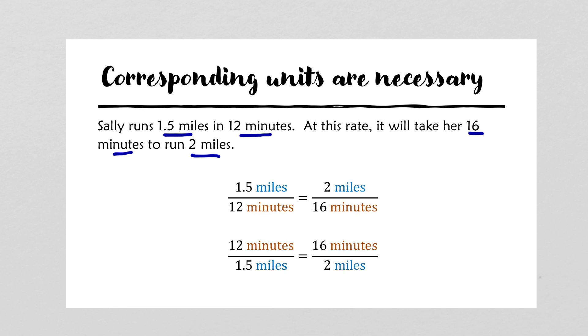What's important to note is when you set up a proportion, the units have to be corresponding. Namely, if on the left side we have a fraction that compares miles on top to minutes on the bottom, then the corresponding fraction on the right must also have miles on top and minutes on the bottom. We can say that 1.5 miles is to 12 minutes as 2 miles is to 16 minutes.